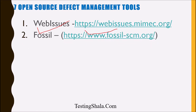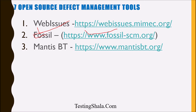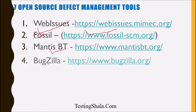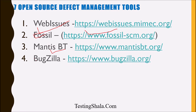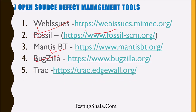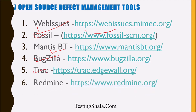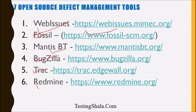The second is Parcel, which is the second defect tracking tool and completely open source. The third is Mantis BT. The fourth is Bugzilla. The fifth is Trac. The sixth is Redmine.